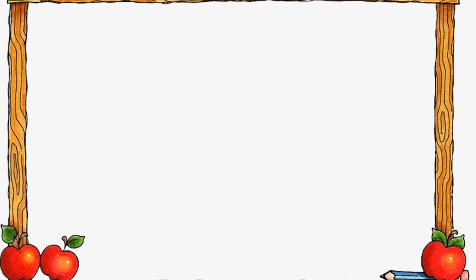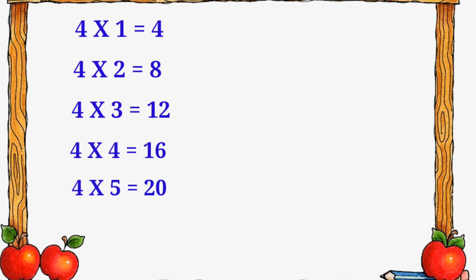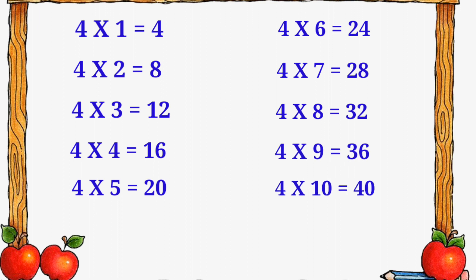Kids, let's revise. 4 1's a 4, 4 2's a 8, 4 3's a 12, 4 4's a 16, 4 5's a 20, 4 6's a 24, 4 7's a 28, 4 8's a 32, 4 9's a 36, 4 10's a 40.